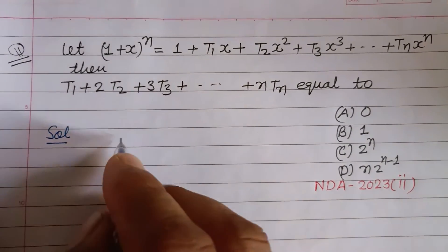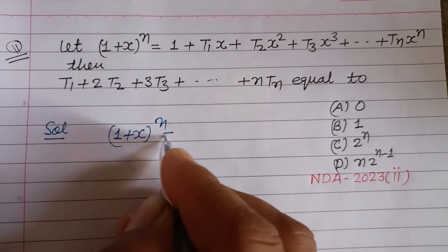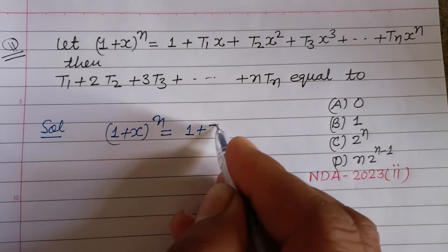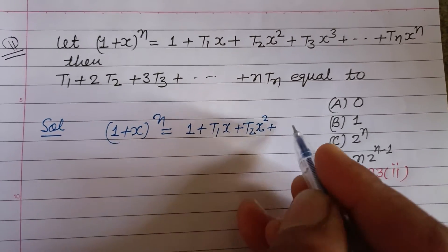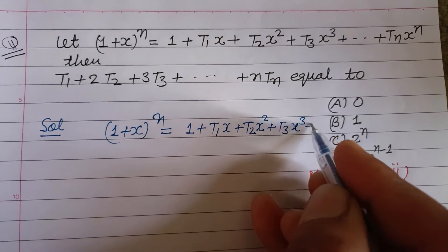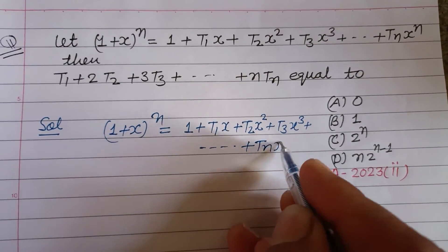So students, here we have (1+x)^n = 1 + T₁x + T₂x² + T₃x³ + ... + Tₙx^n.